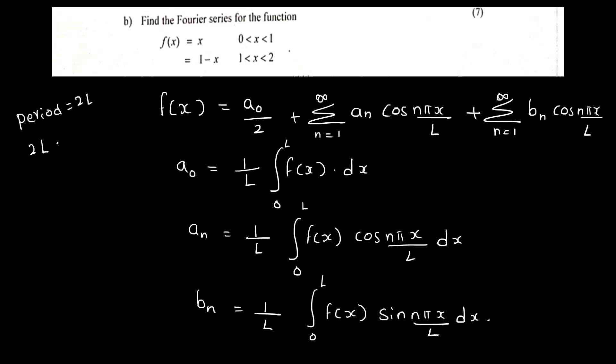2L is equal to 2 minus 0, that is 2. So L is equal to 2 by 2, which is equal to 1. In this case, let's just apply.